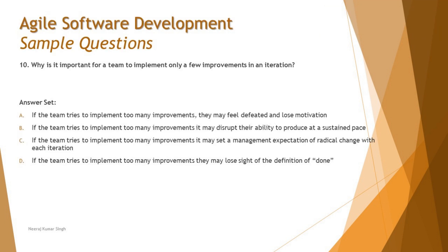Question number 10 asks: why is it important for a team to implement only a few improvements in an iteration? That's a little tricky question — sometimes you can be defined with anything, and it tests whether you really got the context and the importance of the topic.